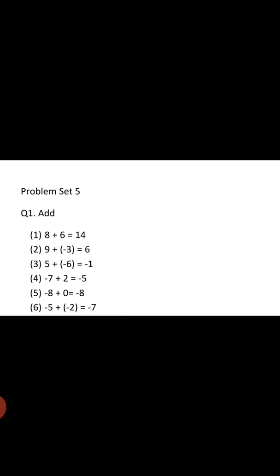Fifth sum: minus 8 plus 0. Minus and plus — different signs, so 8 minus 0 is 8, and sign of greater number is minus, so minus 8. Sixth: minus 5 plus minus 2. Both are negative — same signs, so add: 5 plus 2 is 7, and both integers have minus sign, so the answer is minus 7. This completes question number 1.